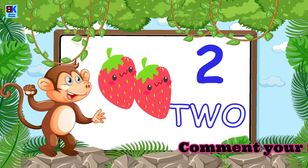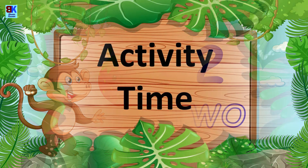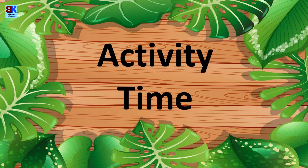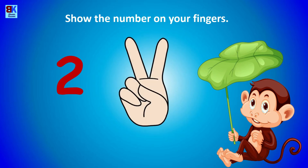Two strawberries — T-W-O, two. Activity time! Now show the number on your fingers: one, two. T-W-O, two.